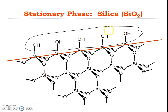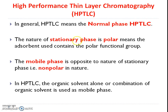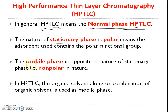When we consider silica gel as the stationary phase, the silanol hydroxyl functional groups form the stationary phase, which is polar in nature. When we talk about HPTLC in general using a polar stationary phase, it is called normal phase HPTLC. Since the stationary phase is polar, the mobile phase used in HPTLC analysis is non-polar — an organic solvent alone or its combination is used as the mobile phase.